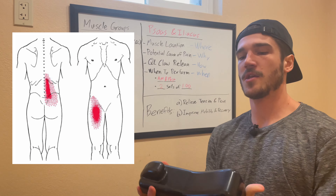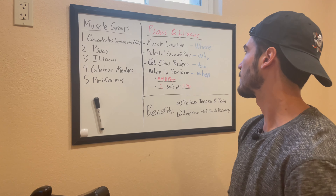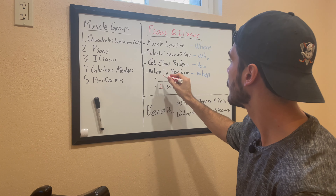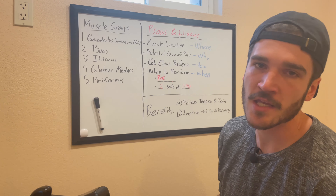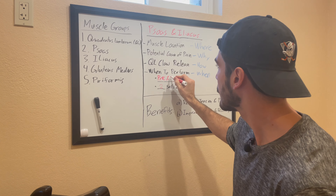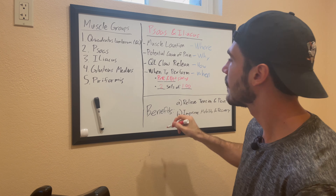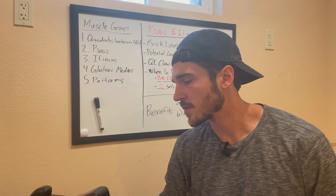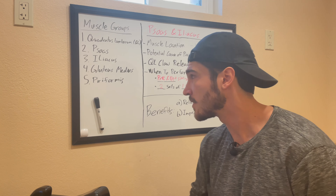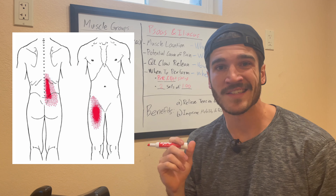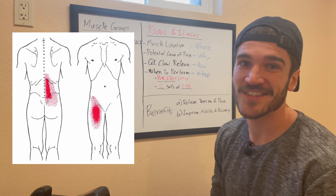For QL claw release on the psoas, you just lay on it; and for the iliacus, you use this part of the tool — check out those video tutorials as well. You want to do this pre- and post-sitting to help open up those hips. About two minutes each side, but this is one you can do even longer. Just take some deep breaths and really work through that tissue, because this pain pattern is gnarly and can cause a whole lot of lower back pain when tight.